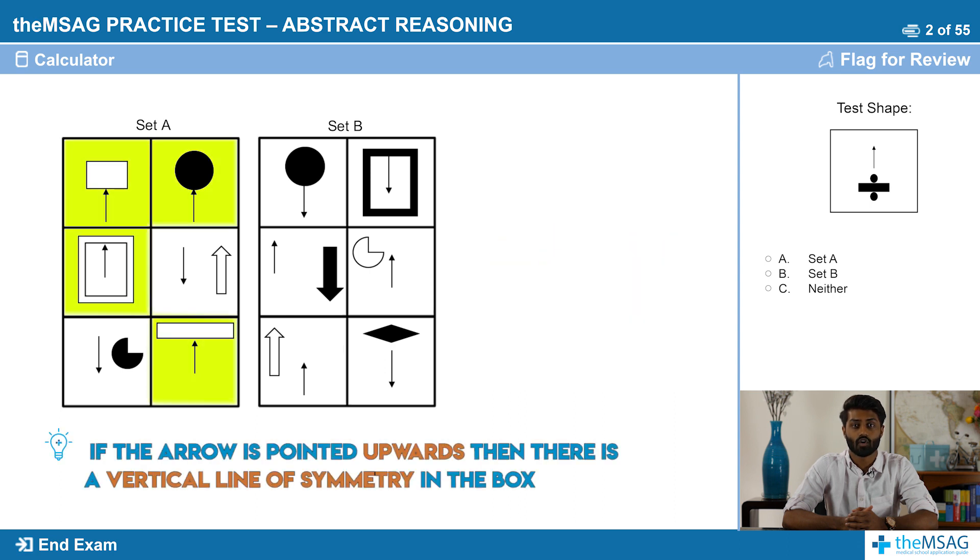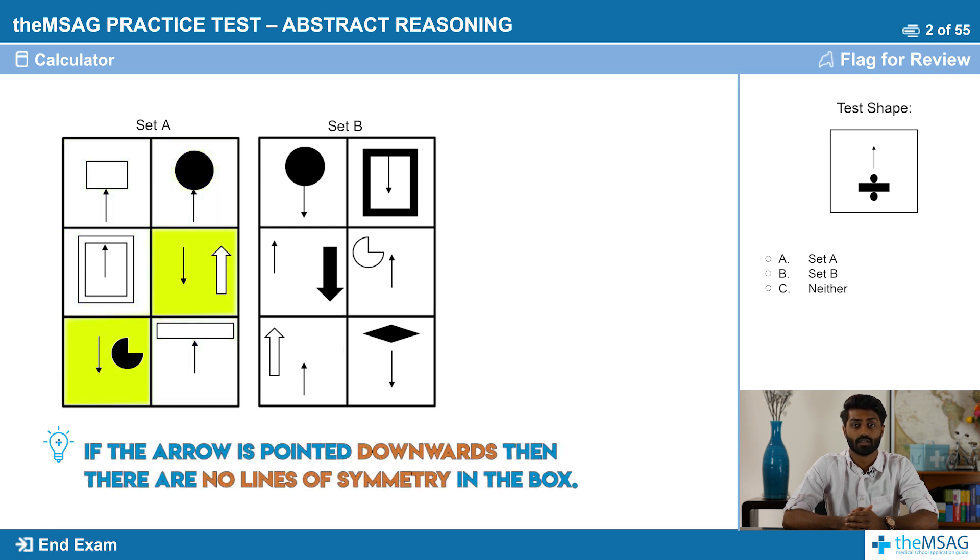In set A, if the arrow is pointed upwards, then there is a vertical line of symmetry in the box. If the arrow is pointed downwards, then there are no lines of symmetry in the box.